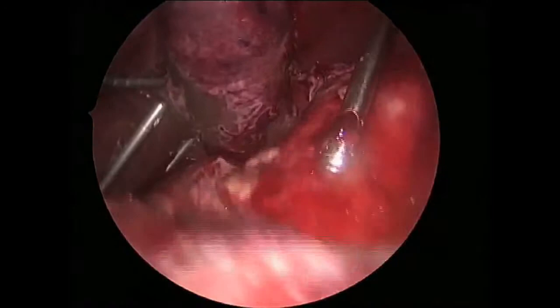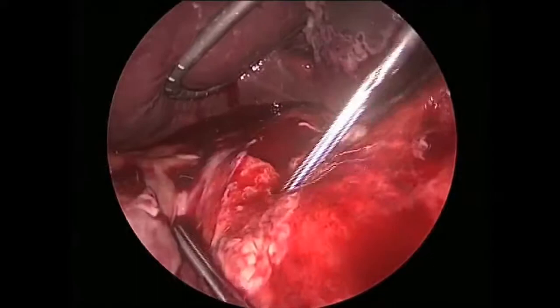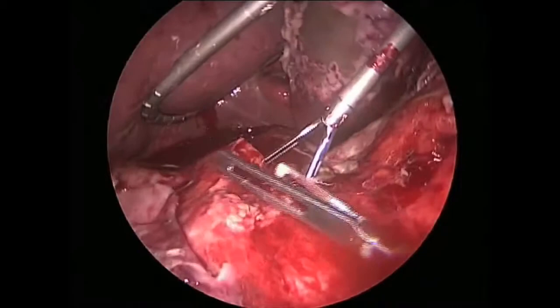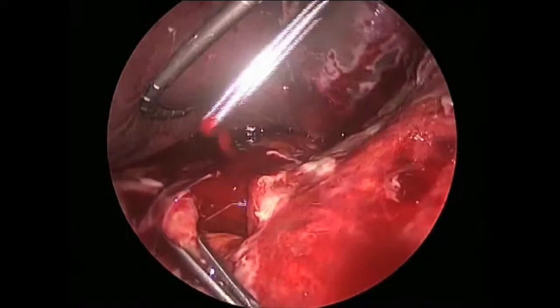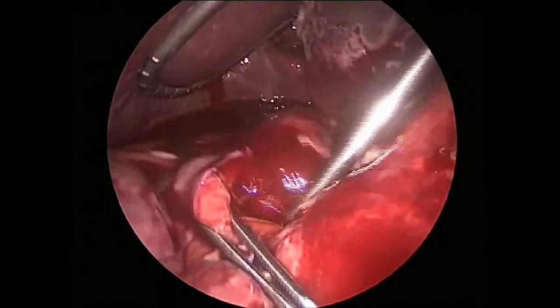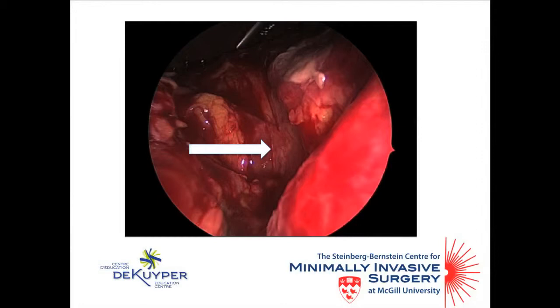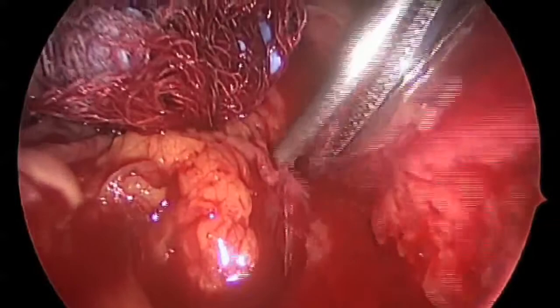We carefully and bluntly dissected the inflammatory tissue planes to identify the lateral border of the duodenum, taking care not to injure it. A linear metallic structure was seen. We were able to identify and remove the foreign body, which appeared to be a bristle from a barbecue brush. There was no evidence of injury to the duodenum.